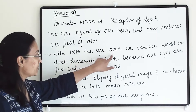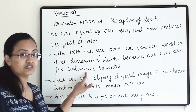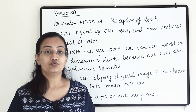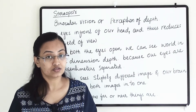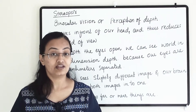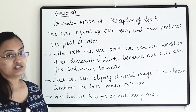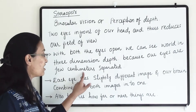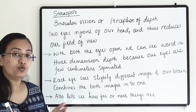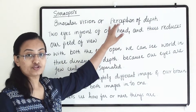With both eyes open, we can see the world in three-dimensional depth because our eyes are a few centimeters apart. You can experience this yourself — close your left eye and look with your right, then shut your right eye and look with your left. You will notice a slight difference in the image, and when both eyes are open together we achieve full perception of depth.